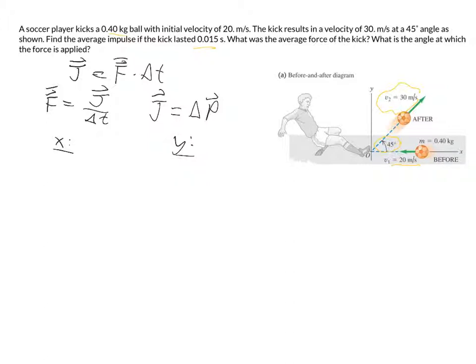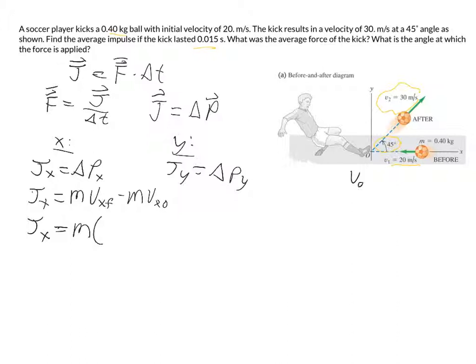In the x direction, the impulse in the x direction is equal to the change in momentum in the x, and impulse in the y direction is equal to the change in momentum in the y direction. And so what that means is that impulse in the x is going to be equal to mass times velocity in the x final minus mass times velocity in the x initial.